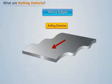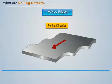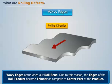Wavy edges. Wavy edges occur when the roll bends. Due to this reason, the edges of the rolled product become thinner as compared to the center part of the product.